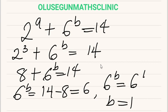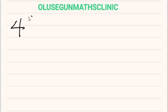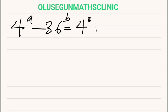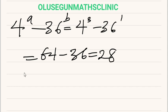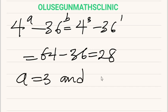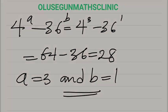Let's cross-check to verify our answer. We have 4 raised to power A minus 36 raised to power B, which is 4 raised to power 3 minus 36 raised to power 1, equal to 64 minus 36, which equals 28. Therefore, A is equal to 3 and B is equal to 1. That is the answer. Thanks for watching.